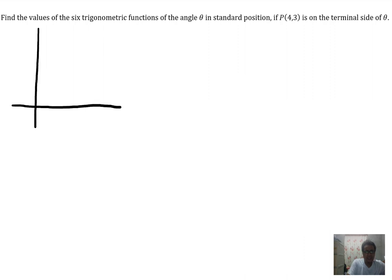So the point that has been intersected by the terminal side is the point (4, 3). So the X is 4: 1, 2, 3, 4, and then Y is 3: 1, 2, 3. Assuming this is the point.